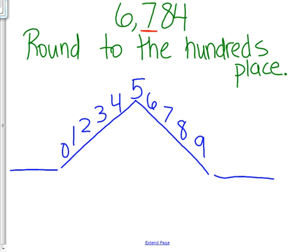We underline the seven. So on this first line, we're going to write everything to the left of the seven correct. We're going to keep the seven. Everything else will become zeros.